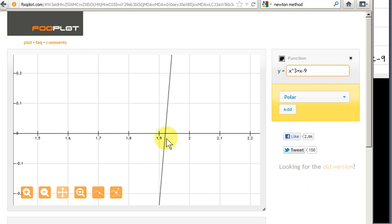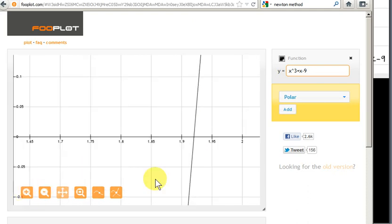So you can see that we're homing in on the root, which appears to be 1.9 something. See it's between 1.9 and 1.95 here.